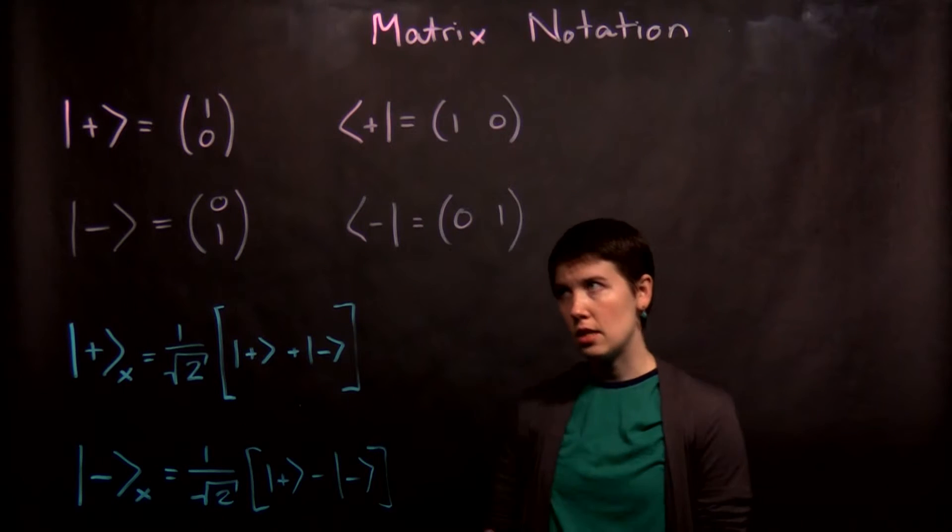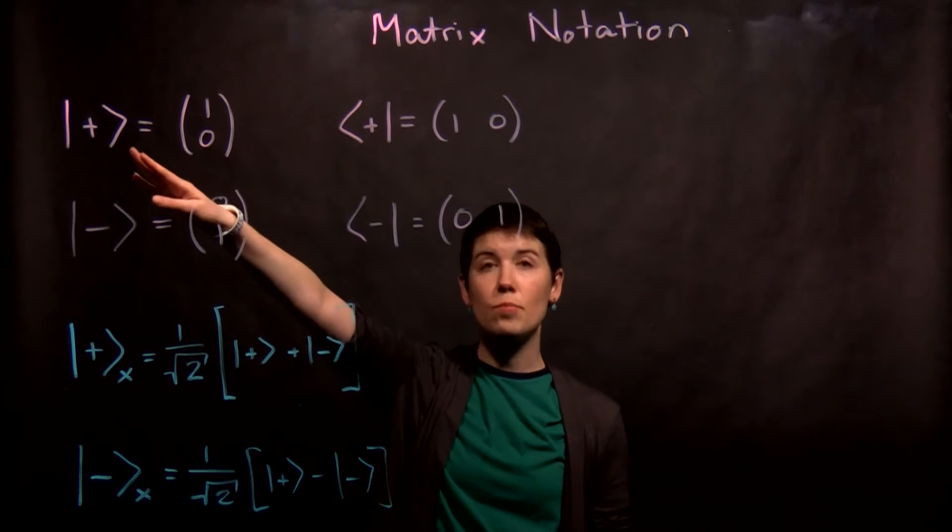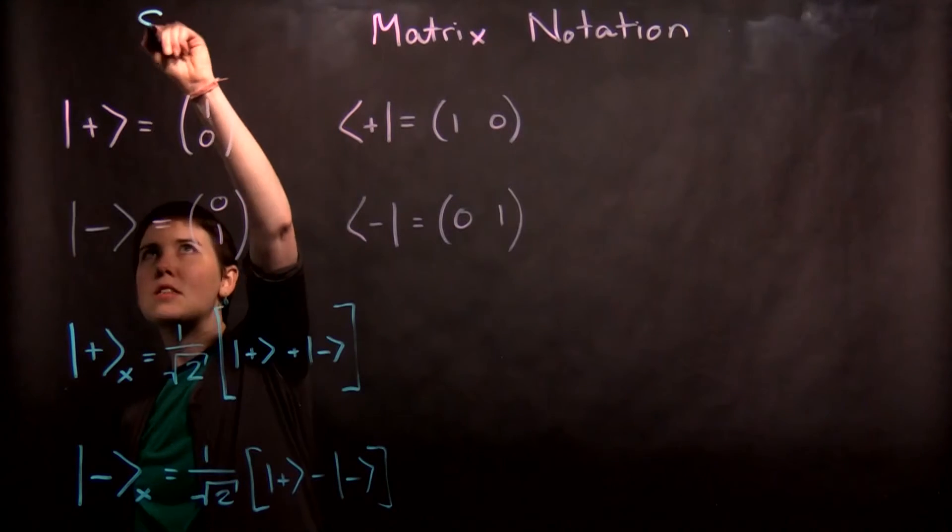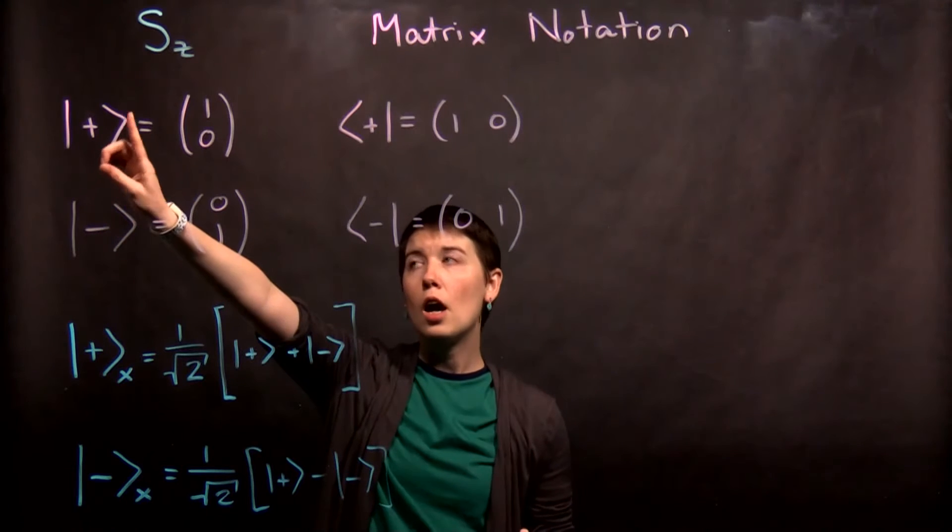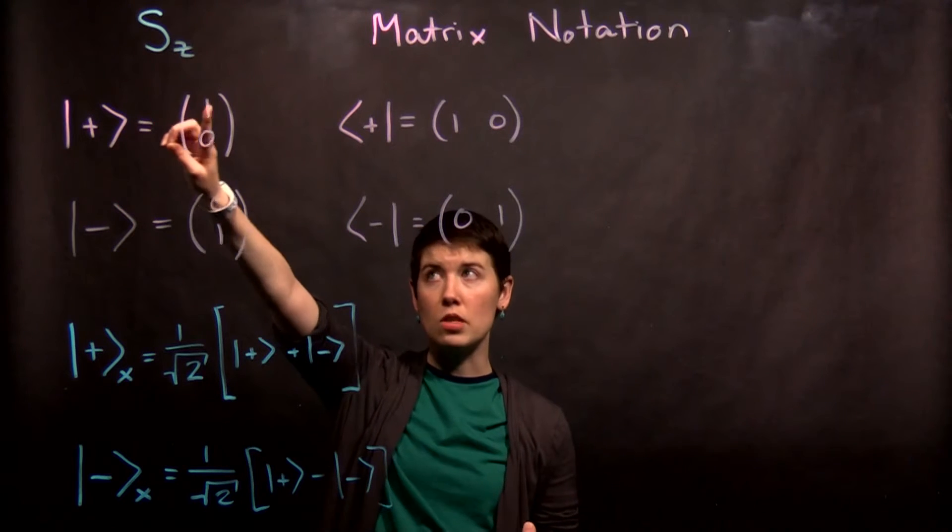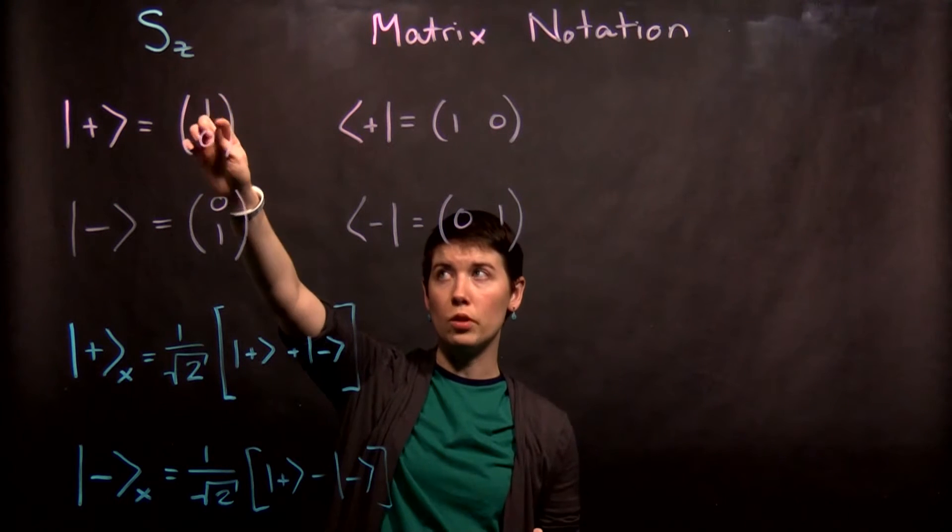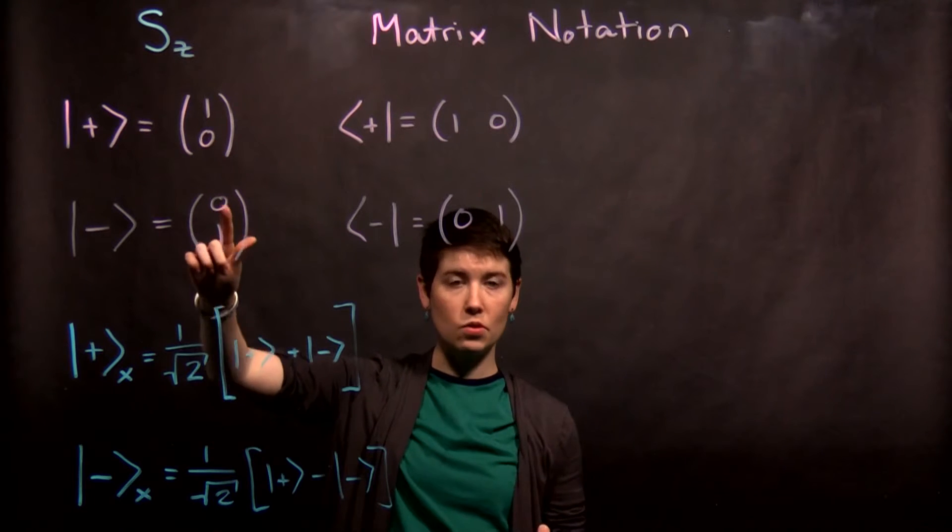So the basic idea is that when we have our z basis—remember we need to specify the basis we're working with and it's going to be spin up and spin down in z—our ket state for spin up is a column matrix where it's one zero, and for spin down it's zero one.